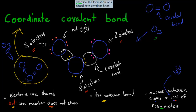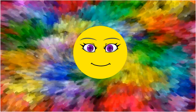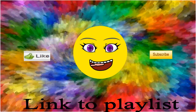This is how we represent that in terms of the Lewis dot structure, or the dash structure, as opposed to normal oxygen. I hope that was useful — thank you for watching.